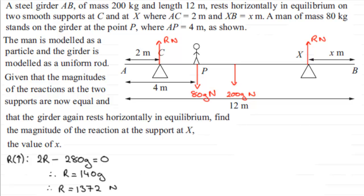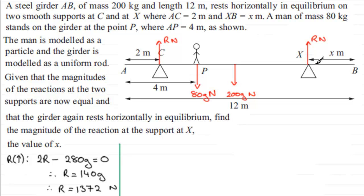For the next part we need to find the value of X, the distance from B to support X. This requires taking moments. You could take moments about any point on the girder and get the same result for X, but the best place for this question is point B — it gives the simplest working with X appearing neatly. So we'll take moments about B.